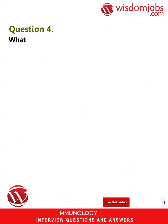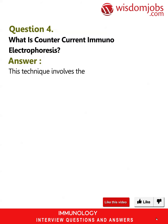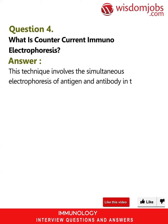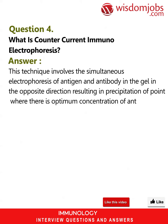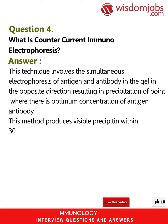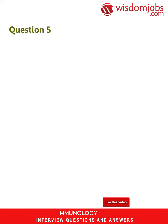Question 4: What is counter current immunoelectrophoresis? Answer: This technique involves the simultaneous electrophoresis of antigen and antibody in the gel in opposite directions, resulting in precipitation at the point where there is optimum concentration of antigen and antibody. This method produces visible precipitin within 30 minutes and is 10 times more sensitive than the standard double diffusion technique.